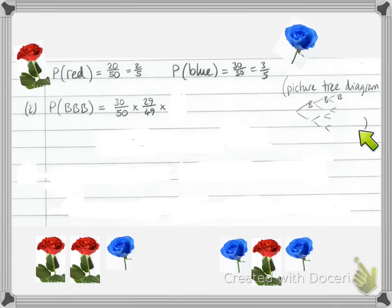Then finally for the third flower, if we've already had two blue flowers, we've got now only 28 left out of 48. So multiply by 28 out of 48. Putting all of this together and simplifying our fraction, we get a probability of 29 out of 140.